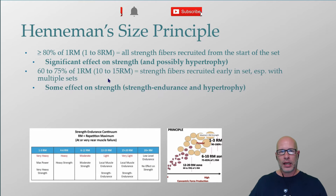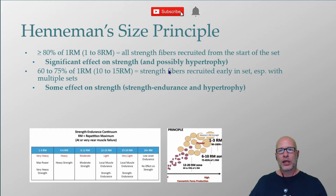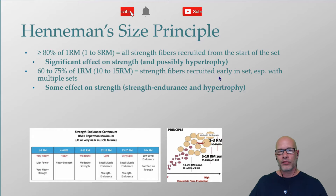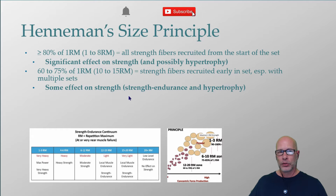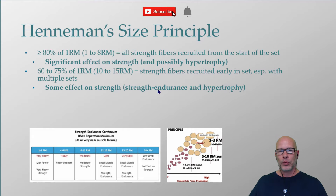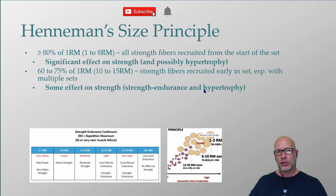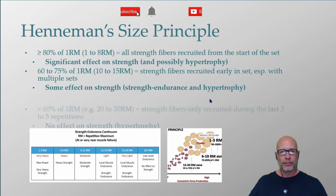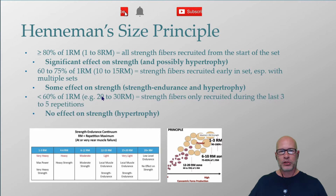As the loads lighten and you're now in the 10-to-15 repetition range — which is 60 to 75% of your one rep max — strength fibers are still recruited early in the set, especially with multiple sets because of fatigue kicking in. You will still have some effect on strength because the load is still heavy enough, but now the adaptations are starting to shift more towards local muscle endurance, or strength endurance. Because you're taking yourself to or near muscle failure, you will still have an effect on hypertrophy.